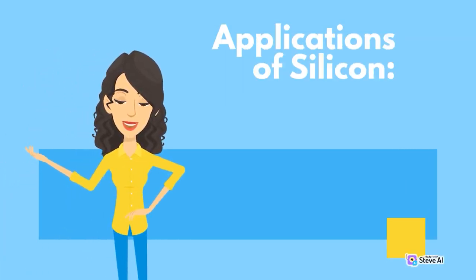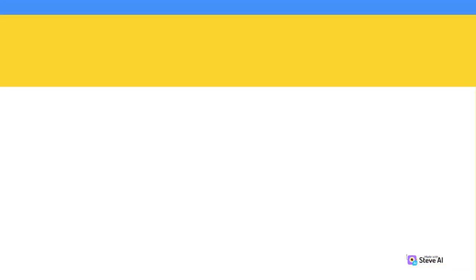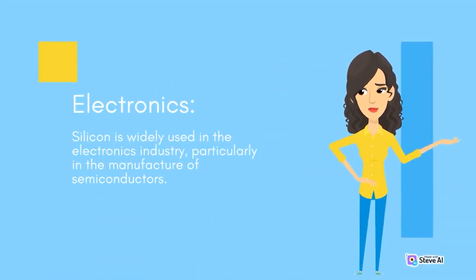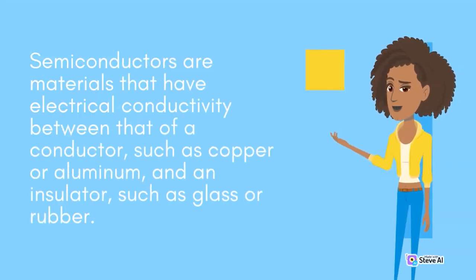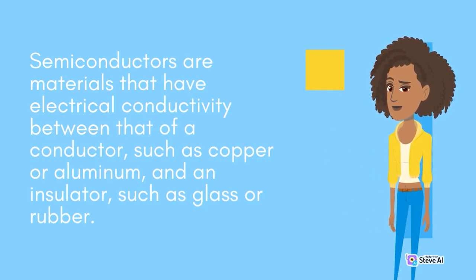Applications of Silicon. Electronics: Silicon is widely used in the electronics industry, particularly in the manufacture of semiconductors. Semiconductors are materials that have electrical conductivity between that of a conductor, such as copper or aluminum, and an insulator, such as glass or rubber.